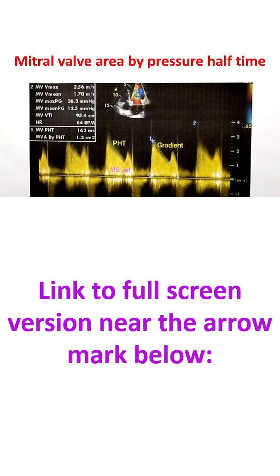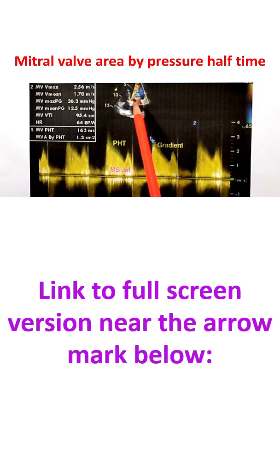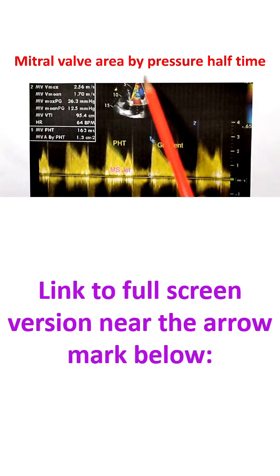So the most commonly used methods are mitral valve area by planimetry and mitral valve area by pressure half time. Pressure half time is simple and can be measured even if we are not getting a good cross section by 2D echo. It is measured in the apical four chamber view.